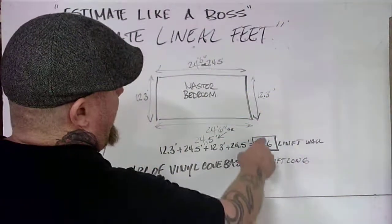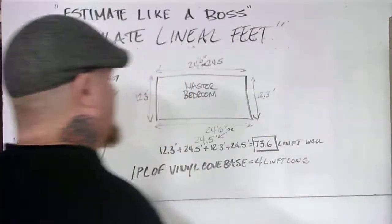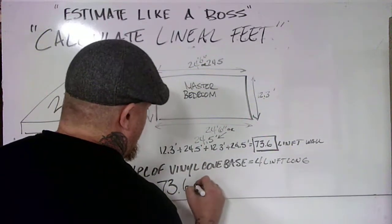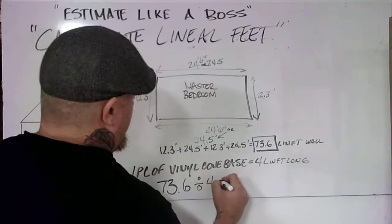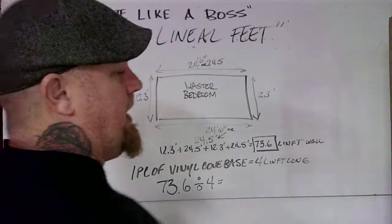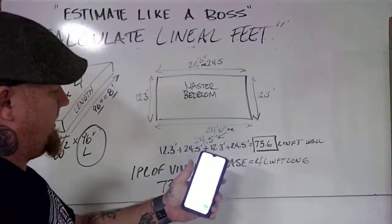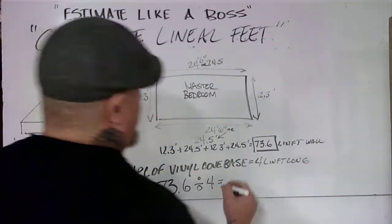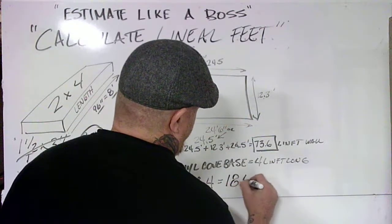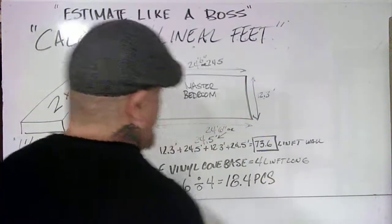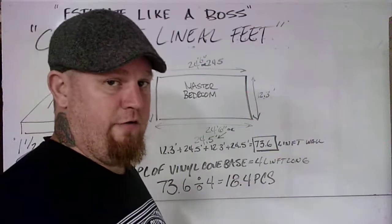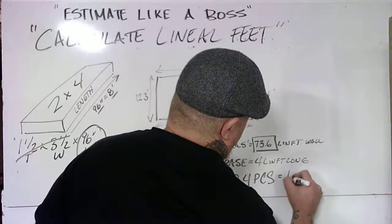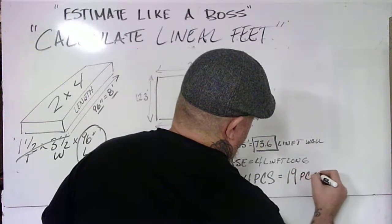How are we going to figure out how many pieces we need? Very simple. We're going to take 73.6, which is our total linear feet of wall, and divide that by 4, because there's 4 lineal feet in a piece of cove base. I already had that number in my calculator. I'm going to divide that by 4. That tells me I need 18.4 pieces. You can't go to Home Depot and cut a 4-foot piece of cove base to 0.4 linear feet, so you would actually need to round up to 19 pieces.